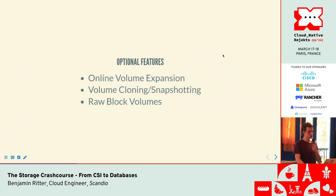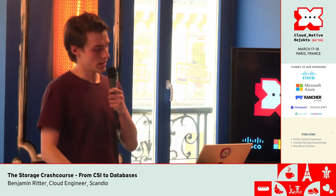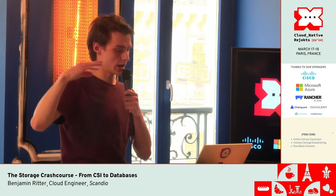There are also some optional features which some CSI drivers support and some don't — like volume expansion. Most support that, but you might have to flip a switch in the storage class. Volume cloning and snapshotting exists, but you can't snapshot between storage classes. If you do a snapshot on Azure Disk, it stays there. The third one is raw block devices, which basically allows you to get a PVC without a file system. If you want to put a Ceph cluster on top of a PVC, you need raw block devices and you can get those — but it's optional.